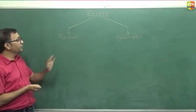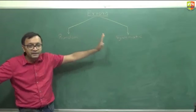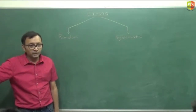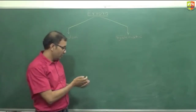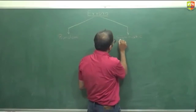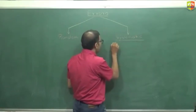Now let's come back to these kinds of errors: random and systematic. What could be an example of systematic error?